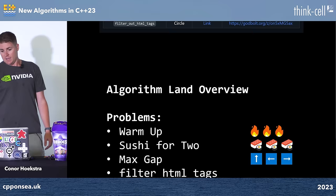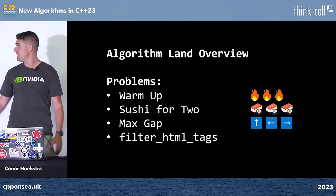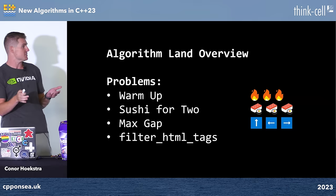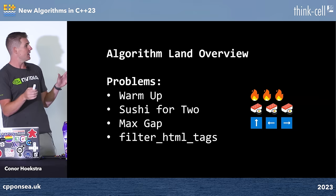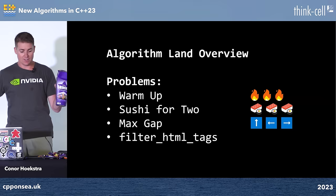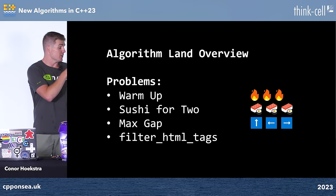Overview for the talk: we're going to spend about 20 to 25 minutes on an algorithm land overview and the new ranges introduced in C++23, and then spend the majority of the talk focusing on examples. The big one is 'Sushi for Two.' We'll do a warm-up problem first, and note that I have chocolates here — if you ask or answer a question, you'll get one.